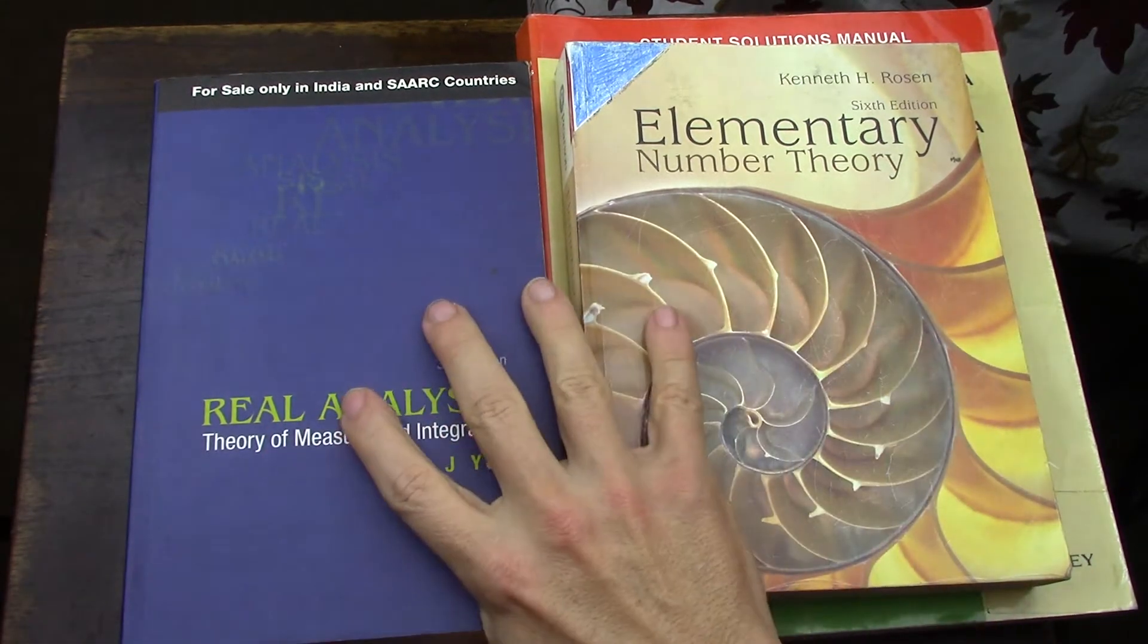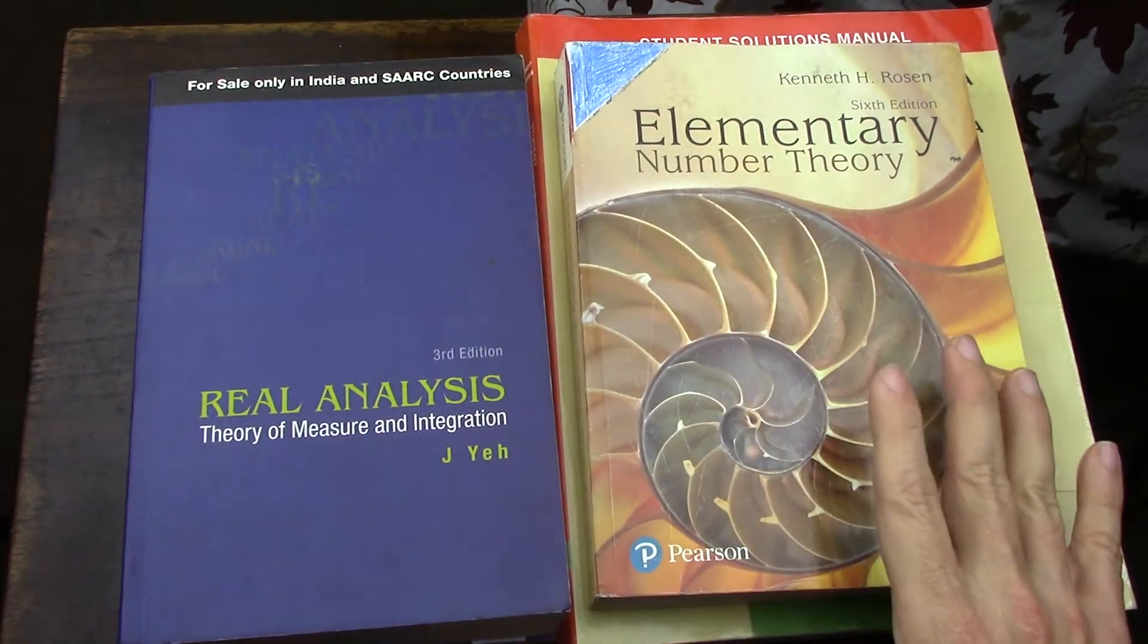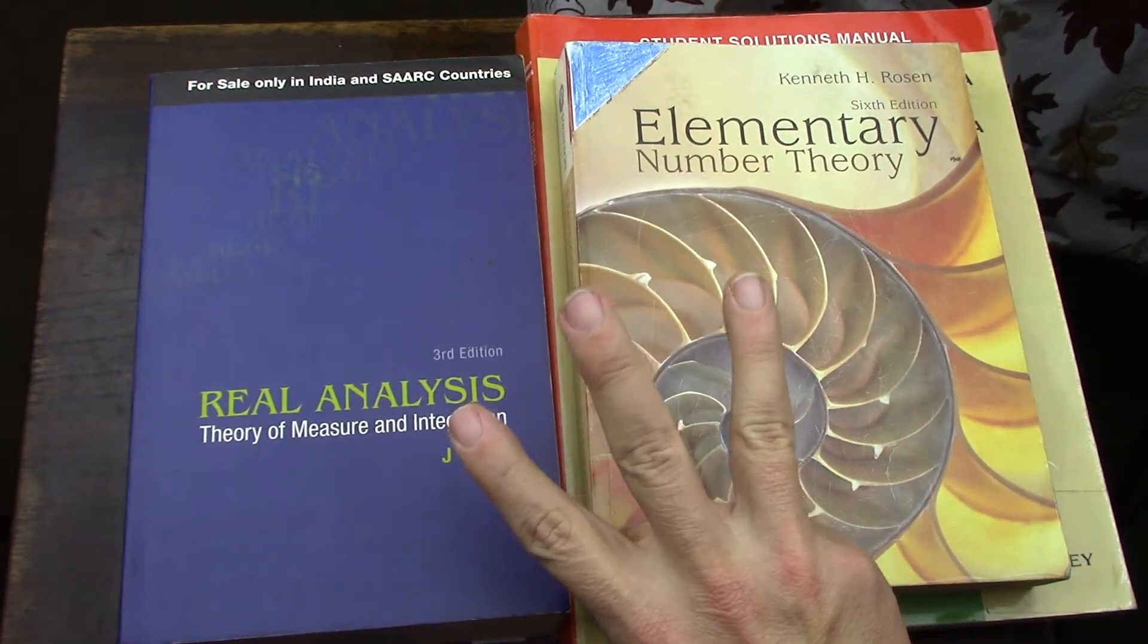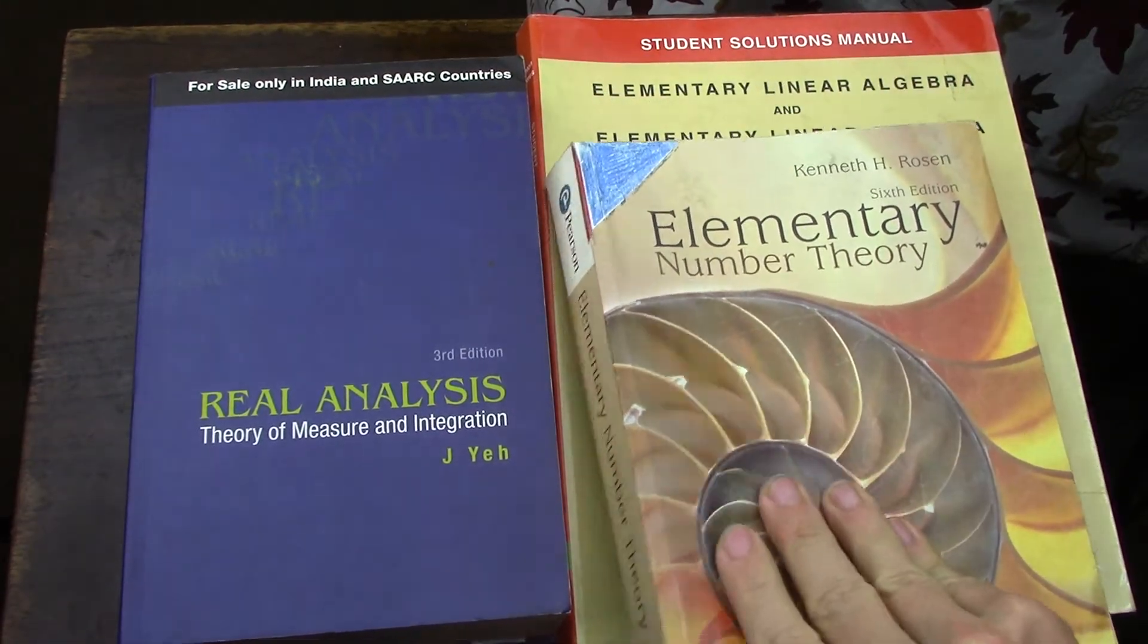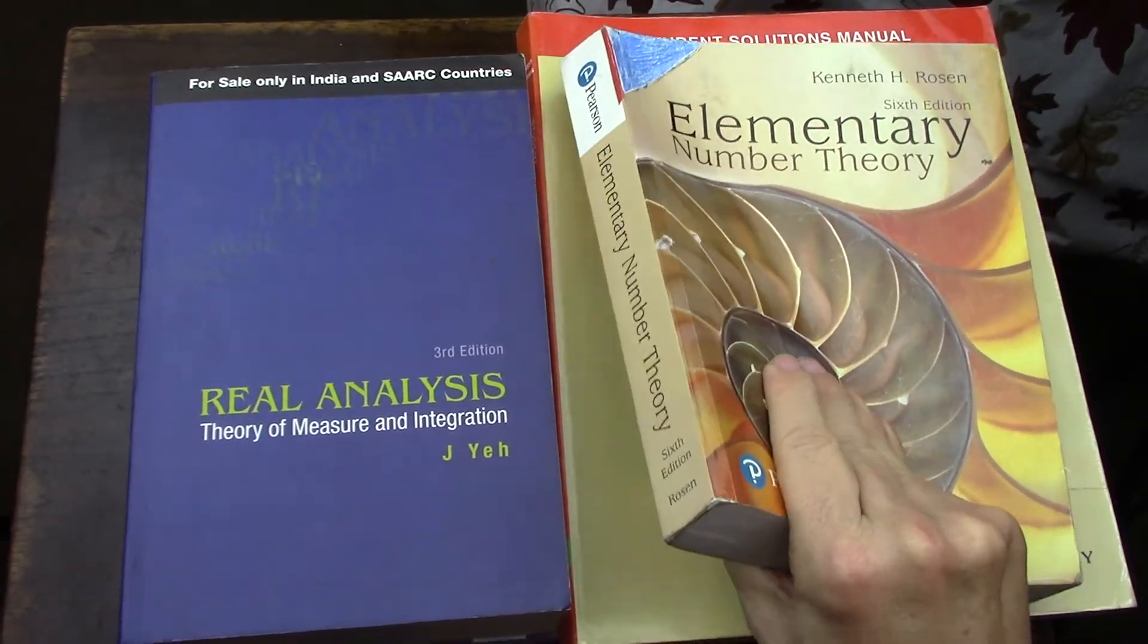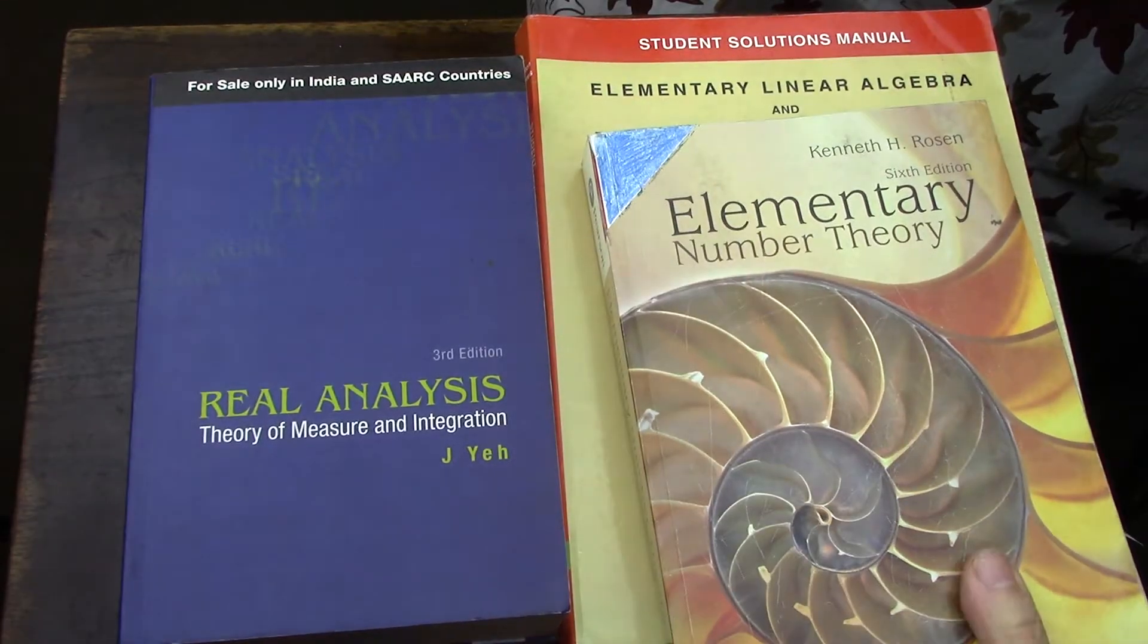So the books here that I have on this table are representative of the three types. The first type is a book with a lot of answers in the back. Rosen number theory definitely wins that contest.